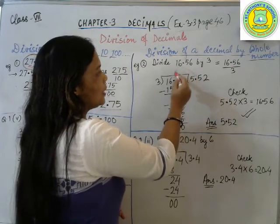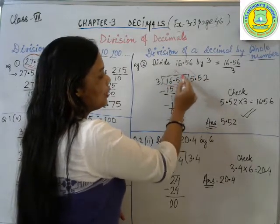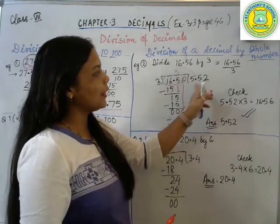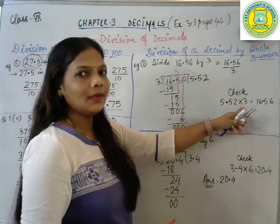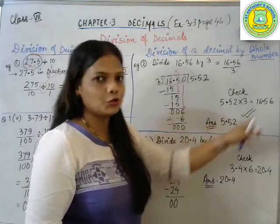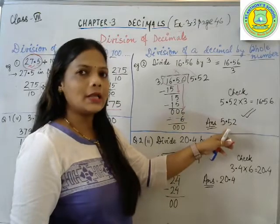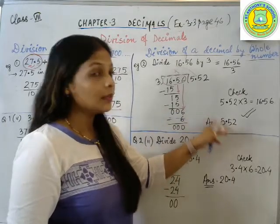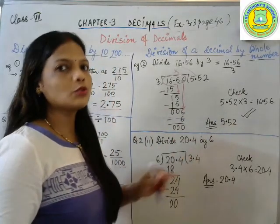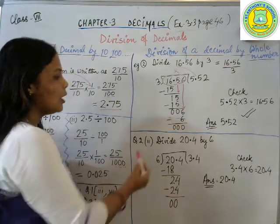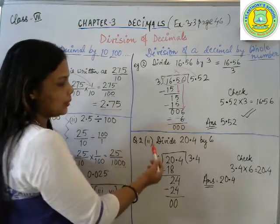And how to check? Hope you remember the division algorithm. Dividend is equal to quotient into divisor. When you will multiply these two numbers, you will get this answer. So I have done to show you 5.52 into 3 will be 16.56. So check, my answer is correct. So the answer is 5.52. That is the way of checking, just to see whether your answer is correct or not.